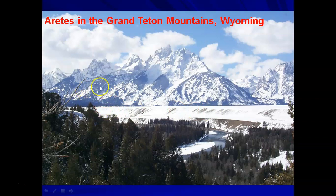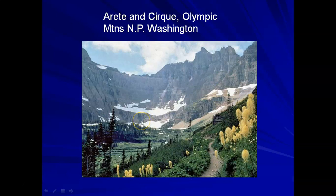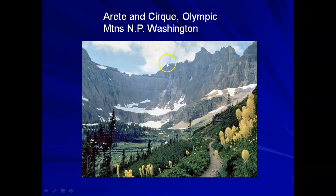Here are the Grand Tetons in Wyoming — arêtes are everywhere. The summit you can't even walk on; it's sharp and narrow. There was glacial erosion on the backside and alpine glaciers moving down, so the divides are now arêtes, created by the erosion of all these alpine glaciers moving down the valleys. Again, in Washington State's Olympic Mountains National Park, there's a beautiful example of a cirque — with a cirque on the other side as well — giving us a beautiful example of an arête.